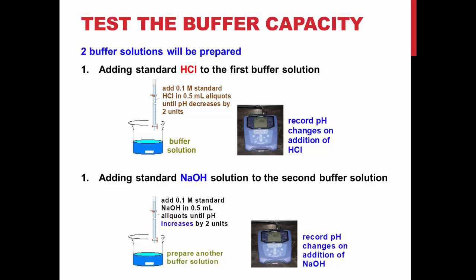Repeat this procedure with a second buffer solution, but adding 0.1 M sodium hydroxide from the burette to the solution instead. Remember to record the initial pH of the buffer.